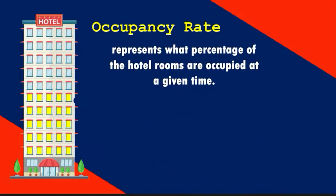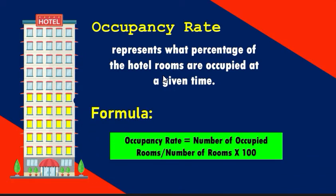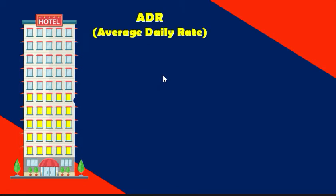When we say occupancy rate, it represents what percentage of the hotel rooms are occupied at a given time. Occupancy rate helps measure the effectiveness of the marketing and sales department, as well as the front office in its external and internal marketing efforts. Occupancy rate is calculated by dividing the total number of rooms occupied by the total number of rooms available, times 100.